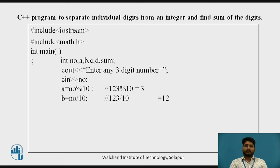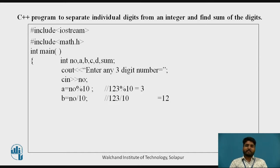We are using two header files. Then in int main, we are taking five variables: number, A, B, C, D, and sum — six variables in total including sum. We display 'enter any three digit number' and that three digit number is stored in variable 'number'. A is equal to number modulus of 10 (percent symbol), and whenever we use the percent symbol we get a remainder.